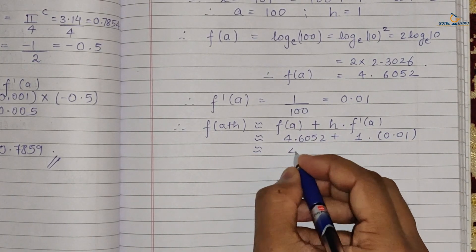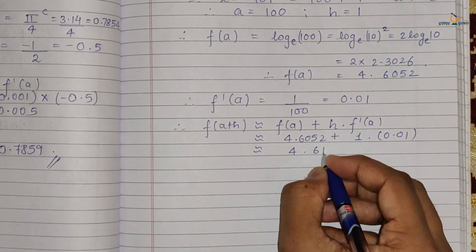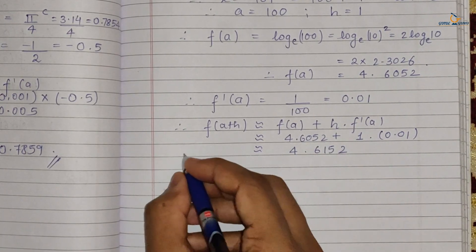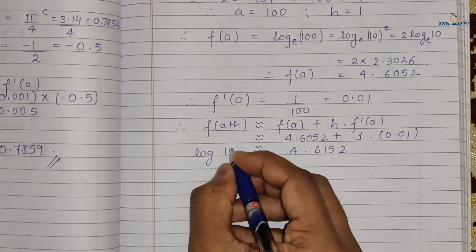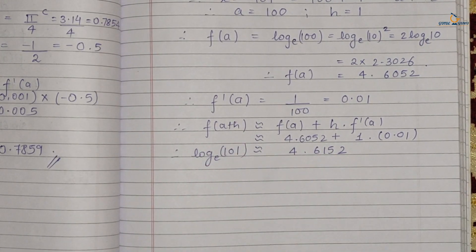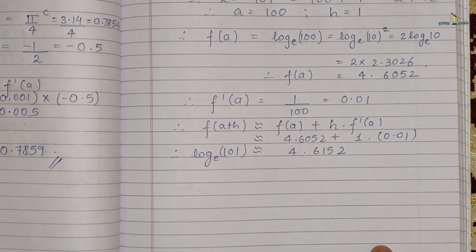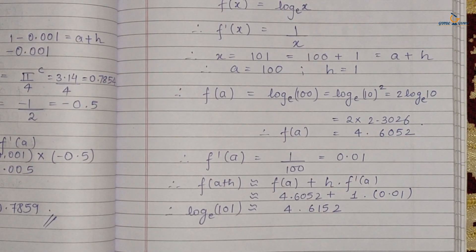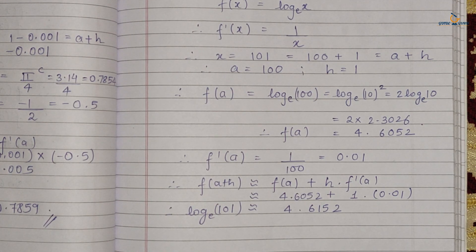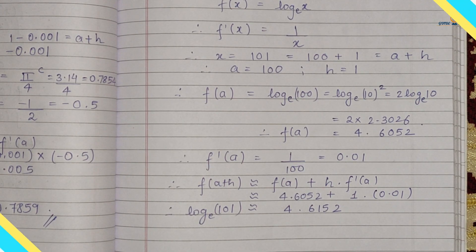So the approximate value of log_e(101) is 4.6152. To summarize: you need to identify the right function, find its derivative, break the given value into a and h, then apply the approximation formula. I hope you understood the topic. If you have any doubts, let me know in the comments. Please subscribe and share. Thank you for watching!